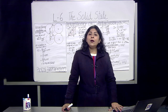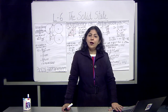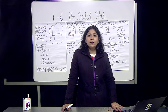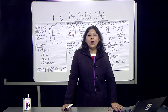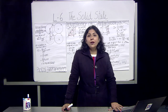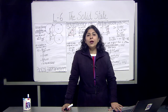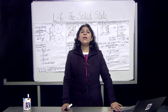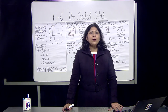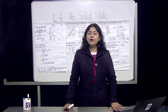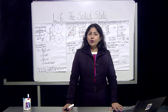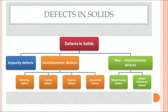The atoms in a solid are properly arranged, but that does not mean they have no defects. There are defects. Crystals have two kinds of defects: point defects and line defects. Point defects are irregularities or deviations from the ideal arrangement around a single point or atom. Line defects are irregularities or deviations from the ideal arrangement in entire rows of lattice points. Let us discuss the different types of point defects one by one.